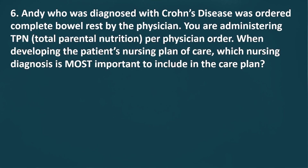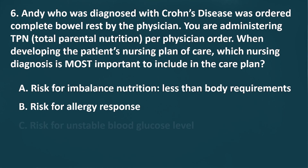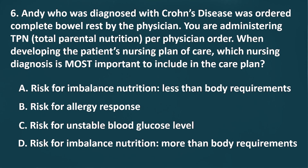Question Number 6: Andy, who was diagnosed with Crohn's disease, was ordered complete bowel rest by the physician. You are administering TPN, total parenteral nutrition, per physician order. When developing the patient's nursing plan of care, which nursing diagnosis is most important to include? A. Risk for imbalanced nutrition, less than body requirements. B. Risk for allergy response. C. Risk for unstable blood glucose level. D. Risk for imbalanced nutrition, more than body requirements.